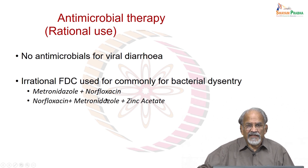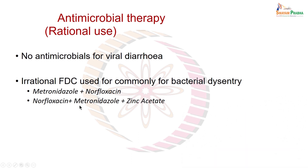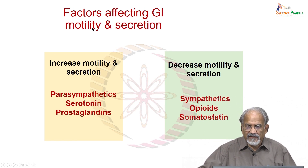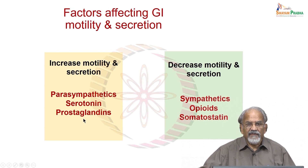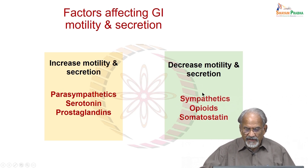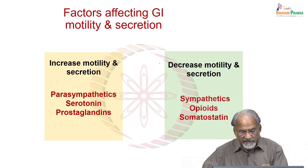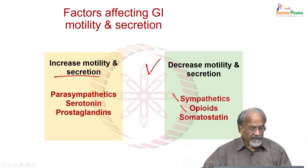Regarding factors affecting GI motility and secretions: increased motility and secretion is driven by parasympathetic agents, serotonin, and prostaglandins. Decreased motility is driven by sympathetic agents, opioids, and somatostatin. To reduce gastric motility, give opioids or sympathetic agents; to increase motility, give parasympathetic agents, serotonin, or prostaglandins. Anti-diarrheal anti-motility agents reduce GI motility, which decreases stool frequency and increases fluid absorption, thereby improving stool consistency.